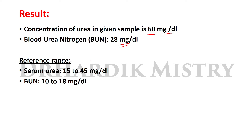In both cases, the concentration of urea and blood urea nitrogen has been increased above the reference range. This condition is known as uremia.